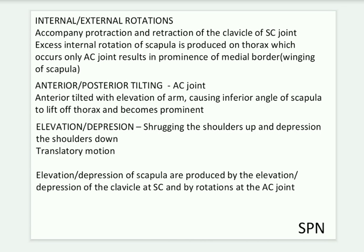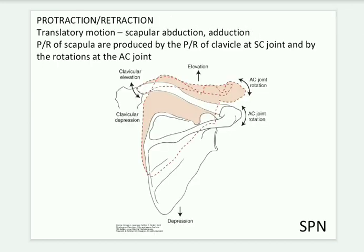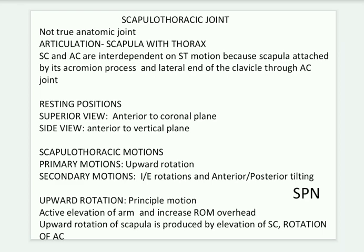Elevation and depression of the scapula occur in translatory motion — elevation is shrugging the shoulders up, depression is pulling them down. These motions are produced by elevation and depression of the clavicle at the AC joint combined with rotations at the AC joint. Protraction and retraction also take place in translatory motion, with the scapula abducting and adducting. Protraction and retraction are produced by clavicular movement at the SC joint and rotations at the AC joint.